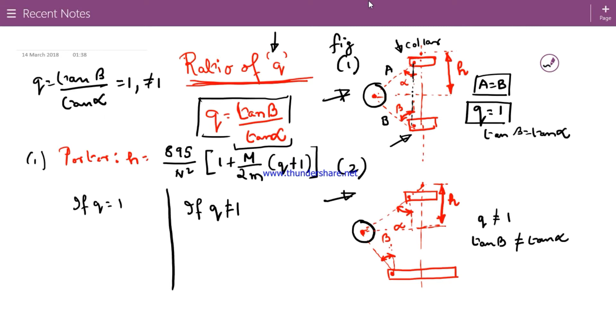But in some cases, it has been seen that even if A is equal to B, this line is not similar, means this distance and this distance is not similar. In that case also Q cannot be equal to 1. So for Q equal to 1 or tan beta equal to tan alpha, for that to happen, your two arms, the upper arm and the lower arm should be equal and this line should match.